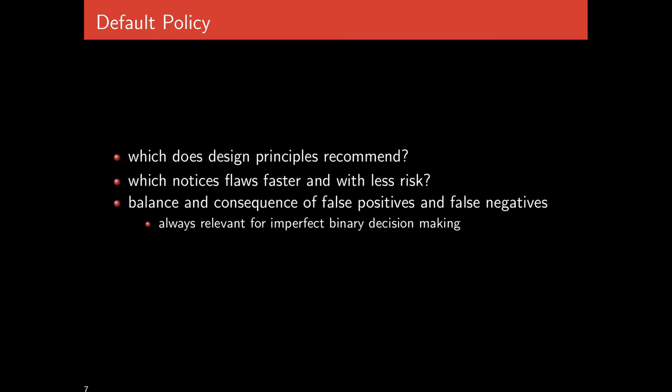Questions to consider: which approach do the design principles discussed at the beginning of the course recommend? Which would notice flaws faster and with less risk to users or the organization? Also consider the balance and consequences of false positives and false negatives. A false positive is when we falsely allow traffic we should have denied; a false negative is when we deny traffic we should have allowed. Since security is often at odds with usability, considering the consequences and frequency of each is relevant when making binary decisions with imperfect information.